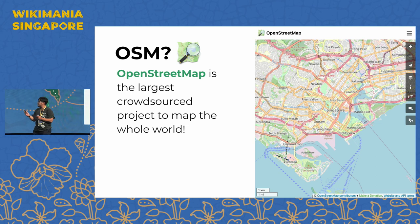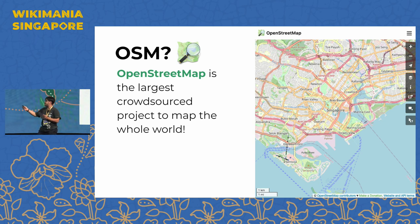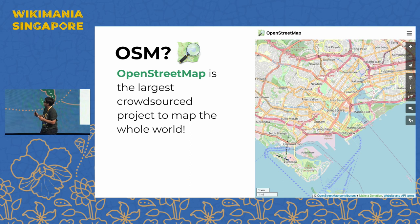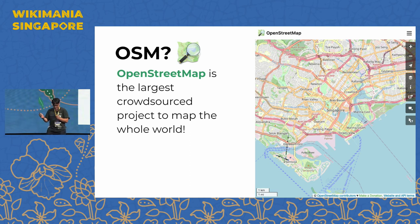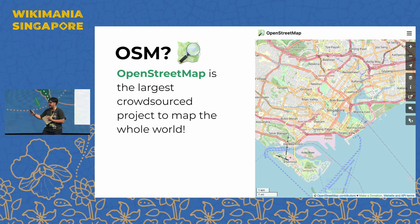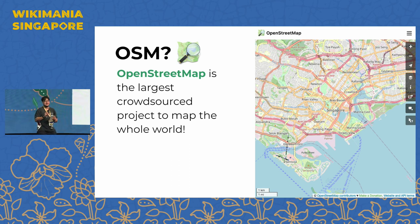We usually describe OpenStreetMap as the largest crowdsourced project to map the whole world. On this slide you can see a portion of the city of Singapore including the islands and the city center. Personally, I describe OpenStreetMap as a geographical database — not only a map tile or an online map like Google, but also a geodatabase with the possibility to link to other third-party databases.